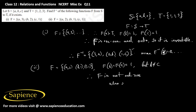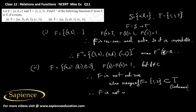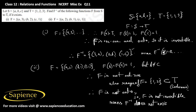Also, the range of the function f equals only {1, 2}, which is a subset of T, so the range is a proper subset of the codomain. Therefore the function f is not onto either. Since it is neither one-one nor onto, the function f is not invertible, meaning f inverse does not exist in this case.